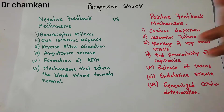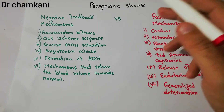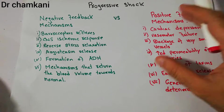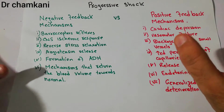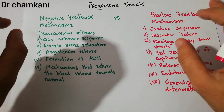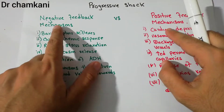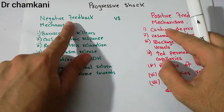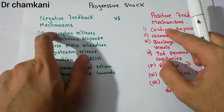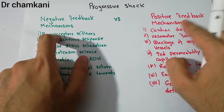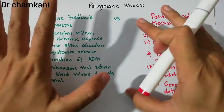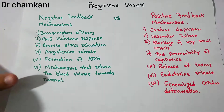Today we will continue our discussion about progressive shock, and this is going to be the last lecture about it. In this lecture we will discuss the tug of war that is going on between the negative feedback mechanisms and the positive feedback mechanisms during progressive shock.